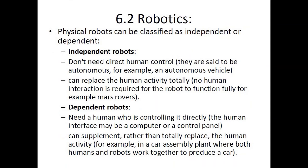Robotics can be classified into two types: independent robots and dependent robots. Independent robots do not need direct human control as they are autonomous — such as self-driving cars, Mars rovers, or space probes which carry out experiments on their own. They can fully replicate human activity with no need for a human to operate them or guide them with a controller.